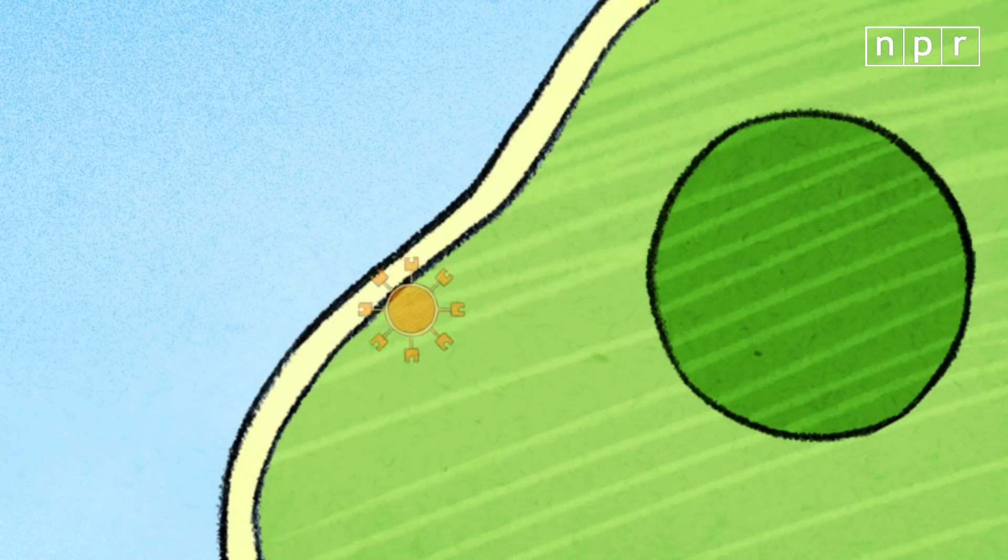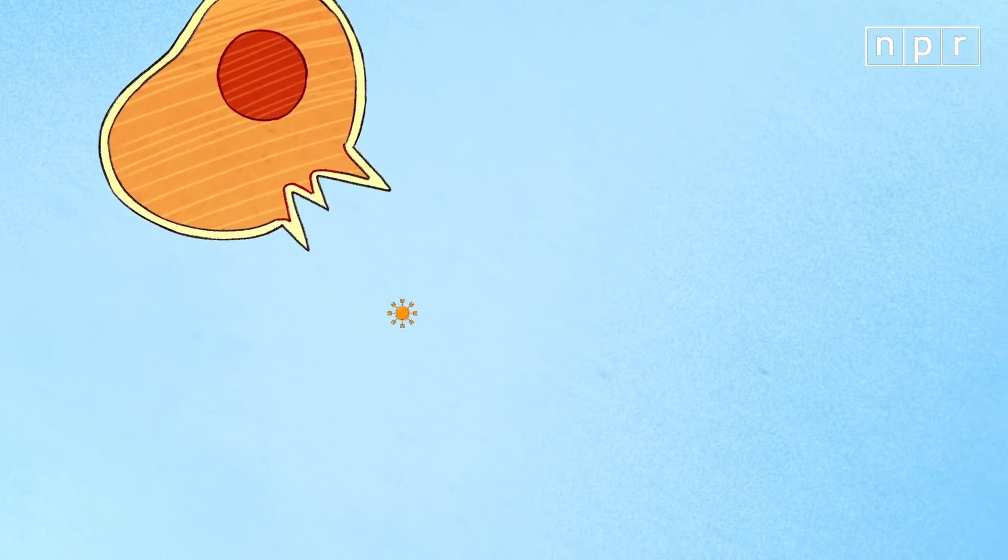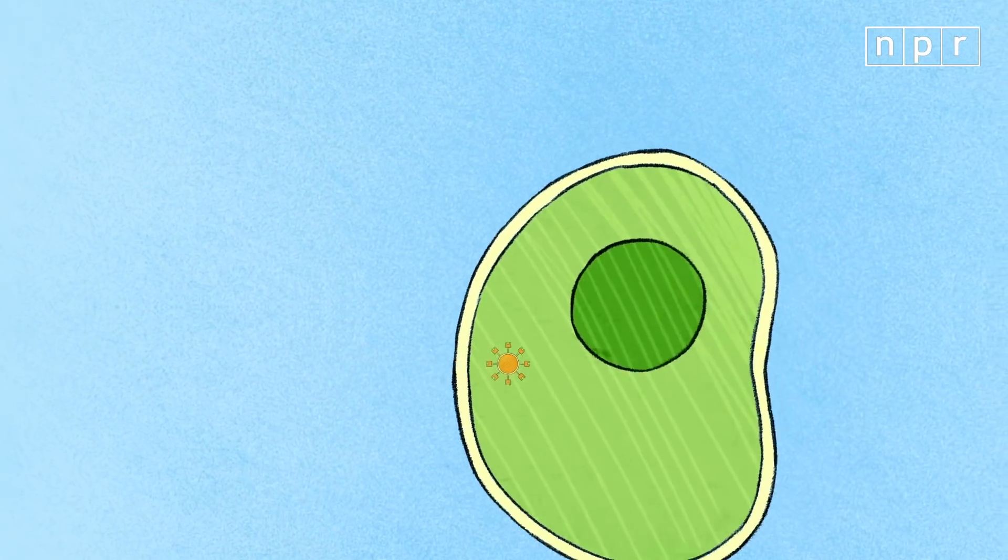Once the virus was inside, it made a bunch of copies of itself, busted the cell wide open, and released new virus particles inside the blood, which went out and found another cell to infect.